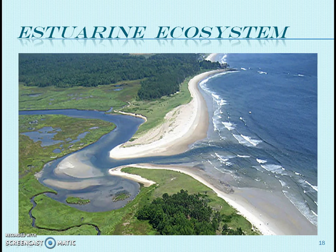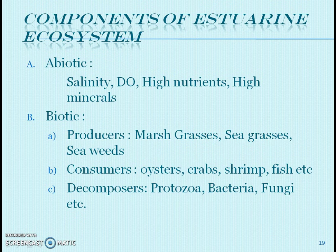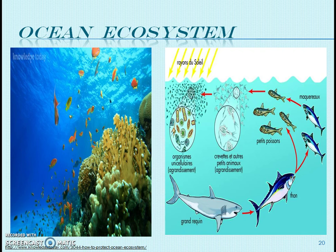Estuarine ecosystem: An estuary is a partially enclosed coastal area at the mouth of a river where fresh water and salty sea water meet. Estuaries have rich biodiversity. Abiotic components include salinity, tides, high nutrients, and high minerals. Biotic producers are marsh grasses and sea grasses. Consumers include oysters, crabs, shrimps, and fish. Decomposers are protozoa, bacteria, and fungi.